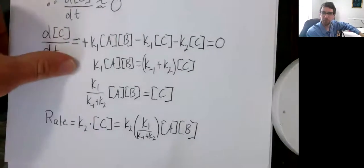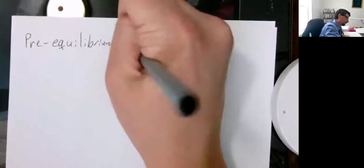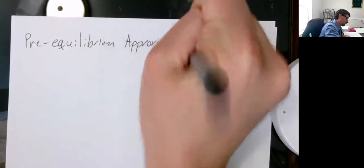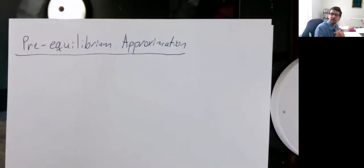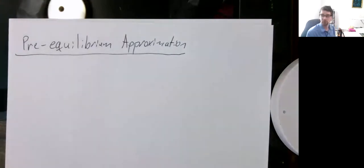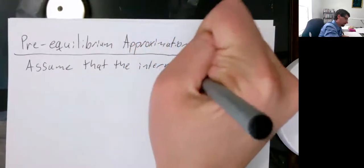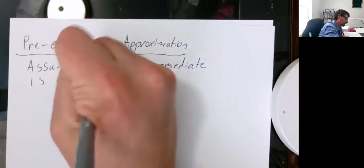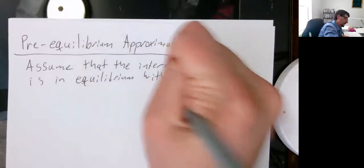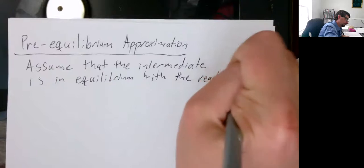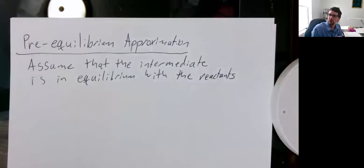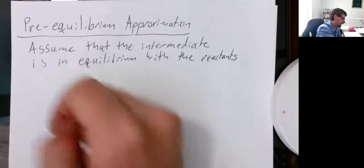So what about the pre-equilibrium approximation? How would our derivation be different? In the pre-equilibrium approximation, what we assume is the intermediate is in equilibrium with the reactants. Normally, we would have to keep track of the reaction quotient to determine this, but we're assuming instead of it being Q, it's the equilibrium. So we have the equilibrium constant expression K.